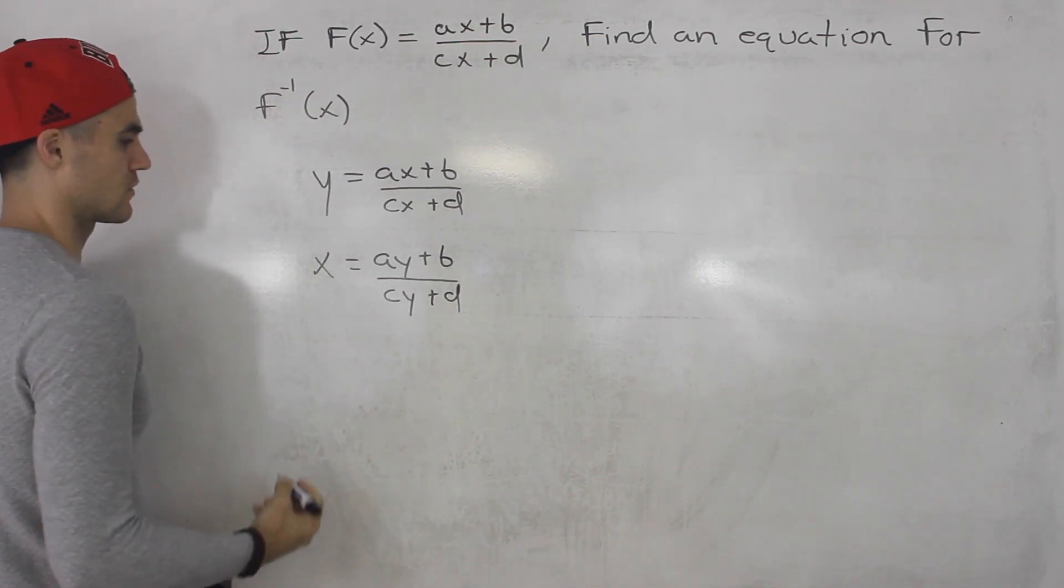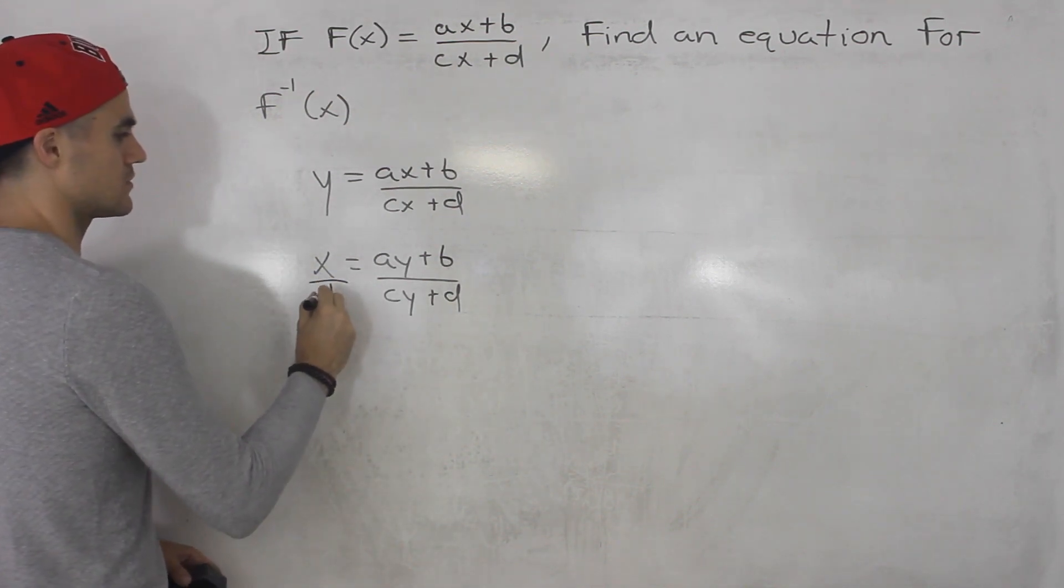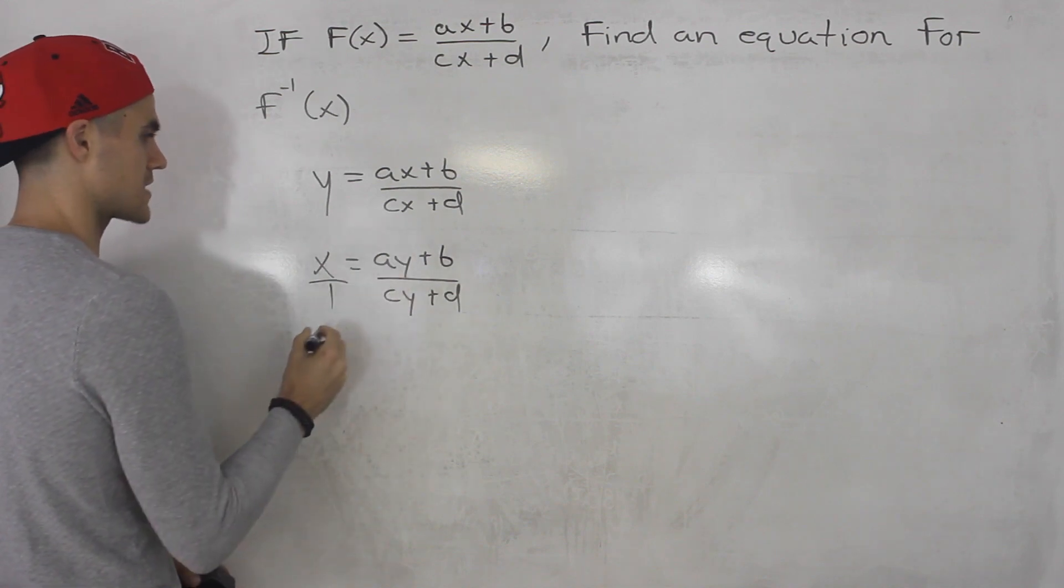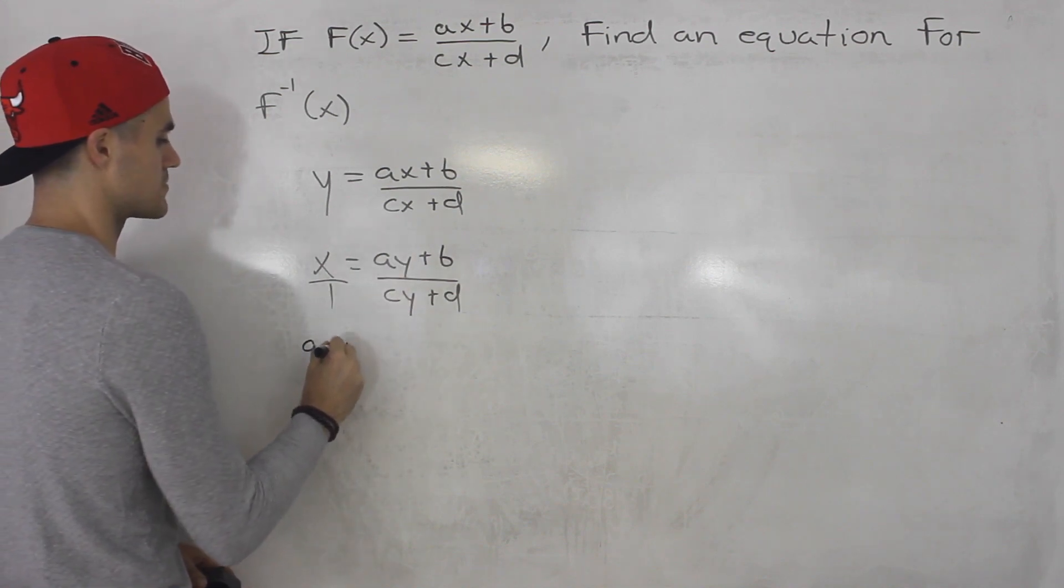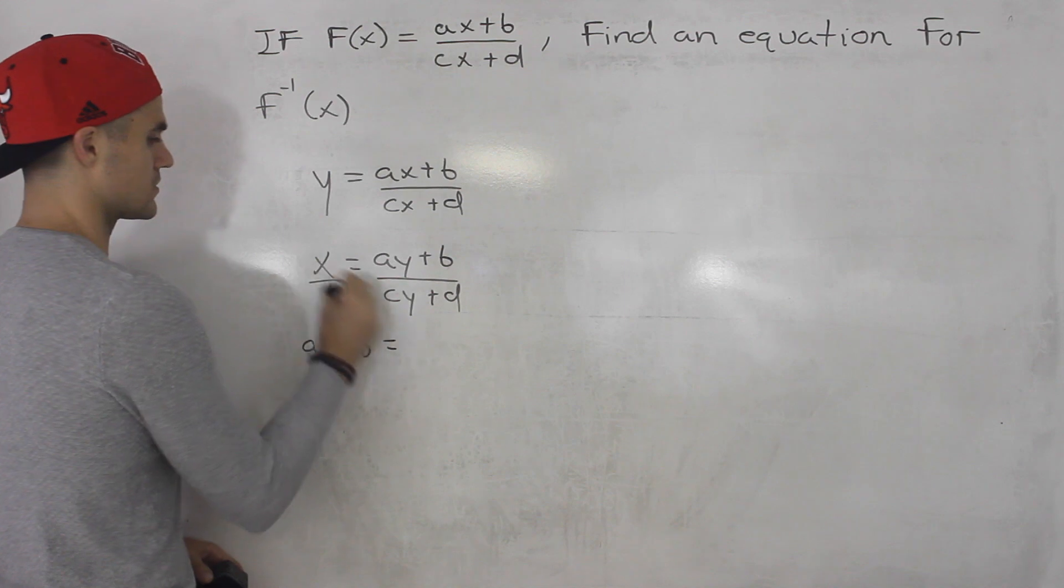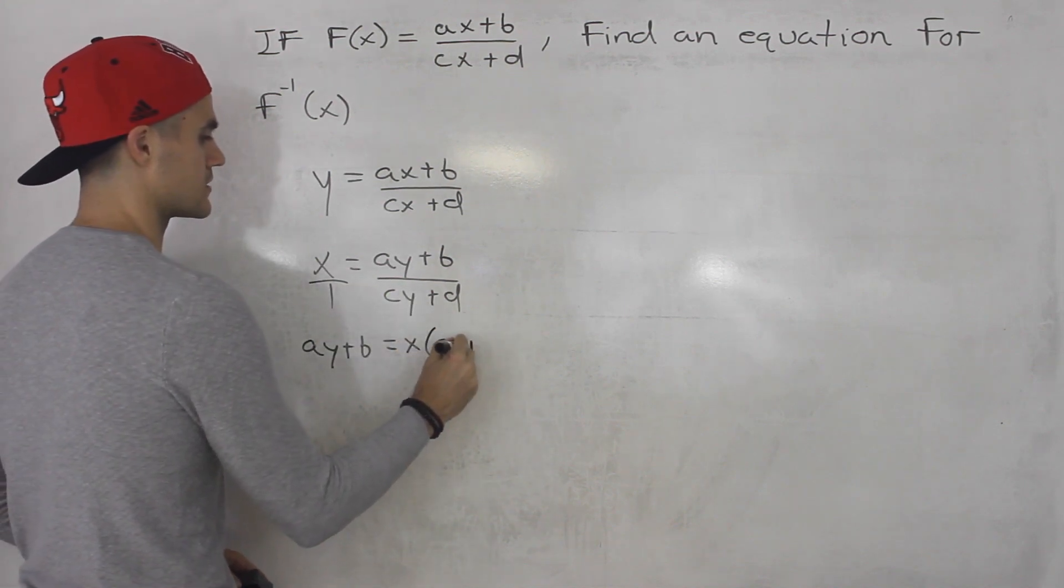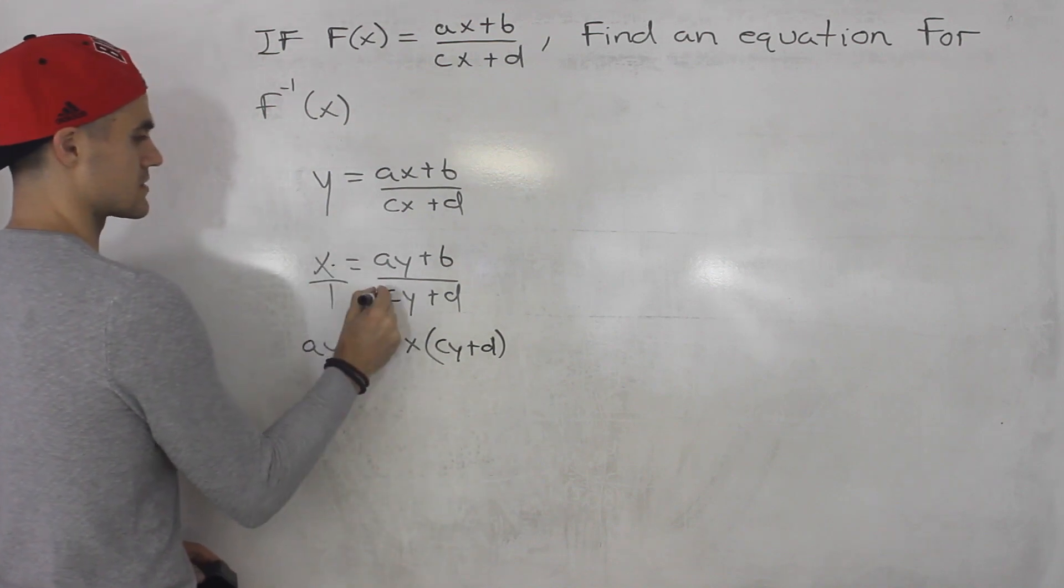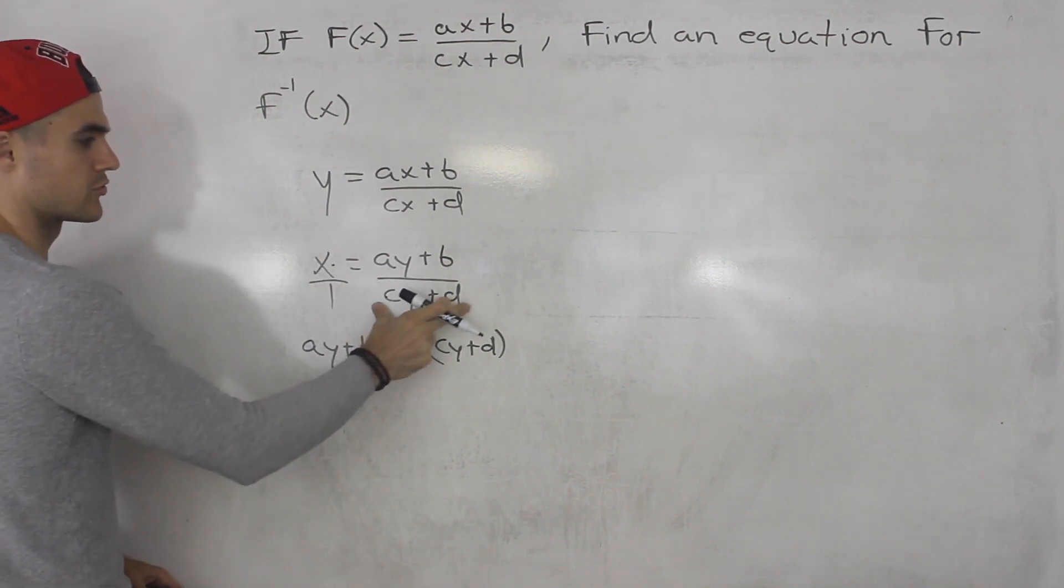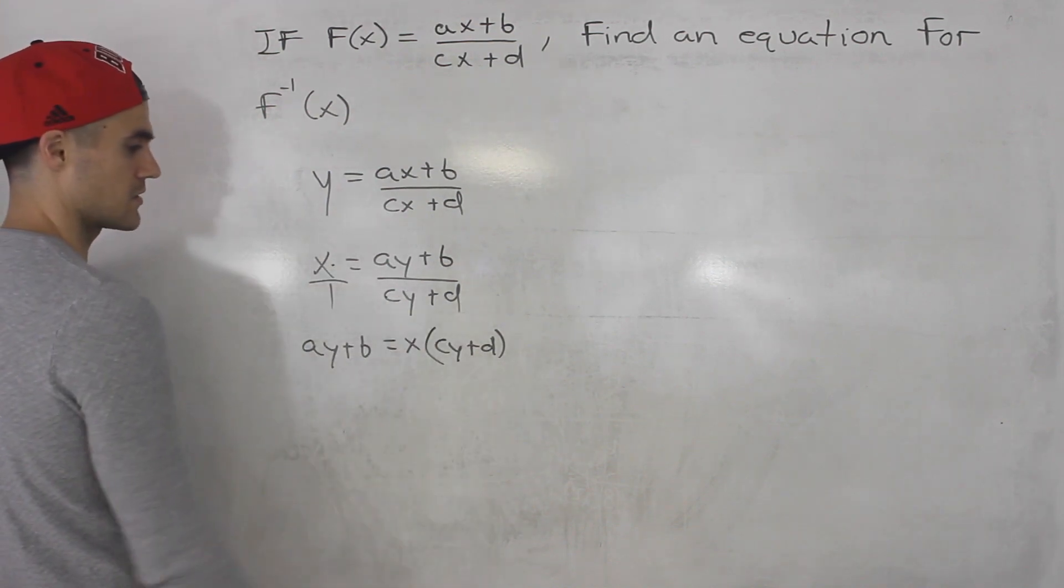So this y turns into an x, then we got a y plus b over c y plus d. Now we got to isolate for this y here. The way you want to do that is you want to cross multiply. So one times a y plus b is just a y plus b equals x bracket c y plus d. So this times that and we're multiplying it by that whole expression so it has to be in brackets there.